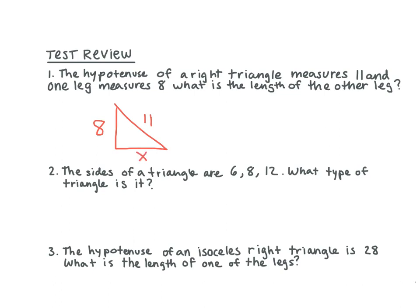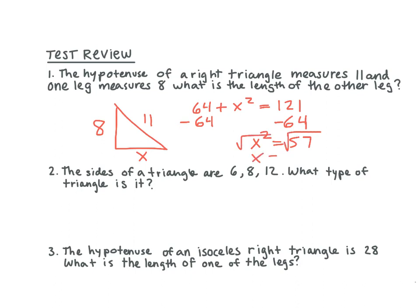What equation are we going to use? 64 plus x squared equals 121. Perfect. Minus 64 and you get 57. Then you get the square root of 57. Awesome. Good job.